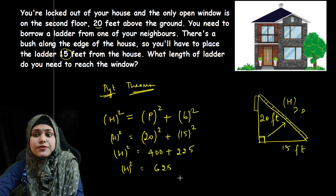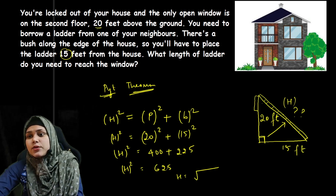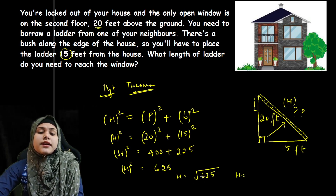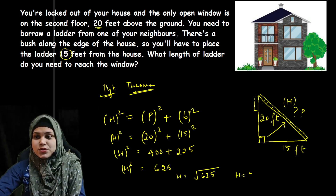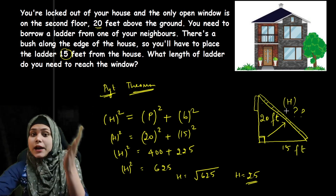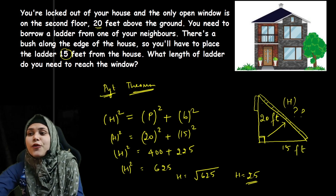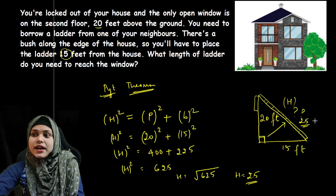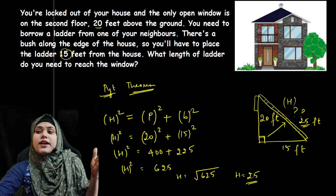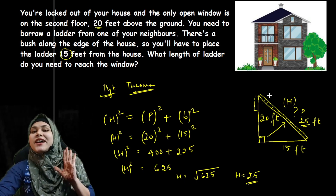Now, when we move the square to the other side — to the right-hand side — the square becomes a square root. The square root of 625 equals 25. So the length of the ladder is 25 feet, and with a 25-foot ladder we will be able to reach the second floor window.